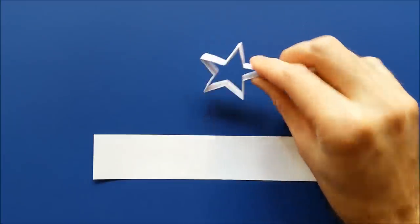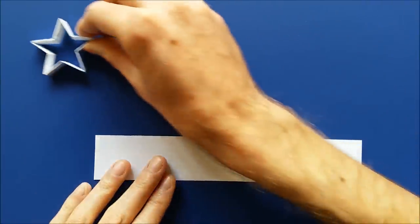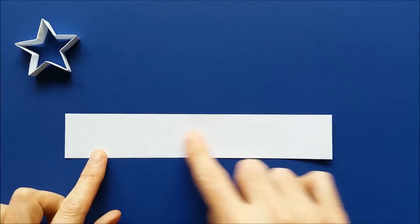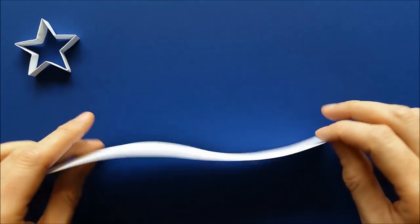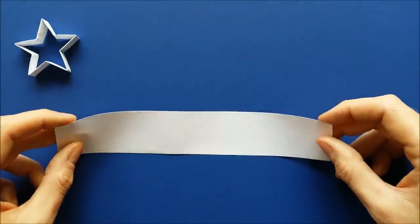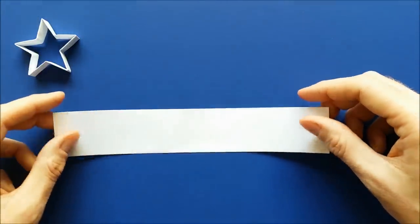To make this origami star, you need one long strip of paper. And the exact size doesn't matter, but it has to be very long. Only one side of the paper will show, so you can use any paper you like. I'm going to show you with white copy paper.